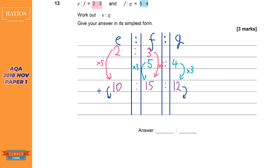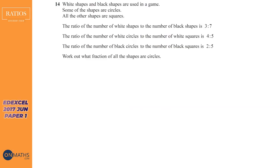We can cancel that down: dividing both by two, 10 to 12 becomes five to six — ignoring the middle one. So the answer is five to six.